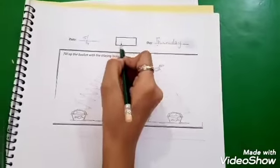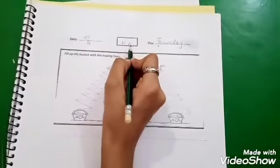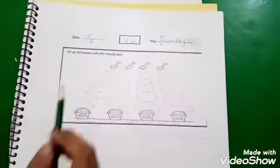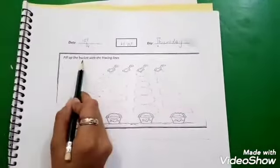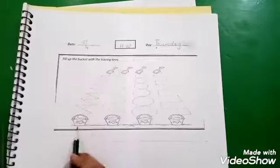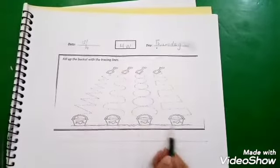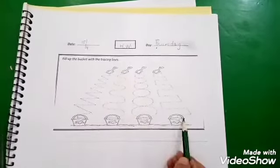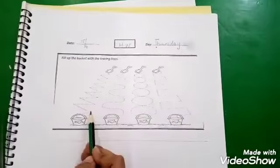Then you will write here H-W. Our today's worksheet is fill up the buckets with the tracing lines. You can see these are the buckets, and you have to fill these buckets by tracing these lines.